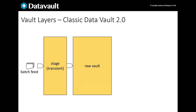The staging layer is used to bring data from external sources or files into the raw vault database for onward processing. Staged data is truncated each load — it's transient. Traditionally, data feeds were batched, but today we can have a mix of streamed data, micro-batched and batched data feeds.